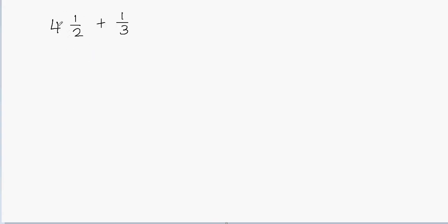How do we convert that? We'll multiply the whole number with the denominator first. So 4 times 2 will be equal to 8, and then you add it to the numerator. So 8 plus 1 is equal to 9. So I can write 9 in my numerator. 9 is the numerator and the denominator will still remain the same, so I can write 2 in my denominator. This is how you convert a mixed fraction into an improper fraction.